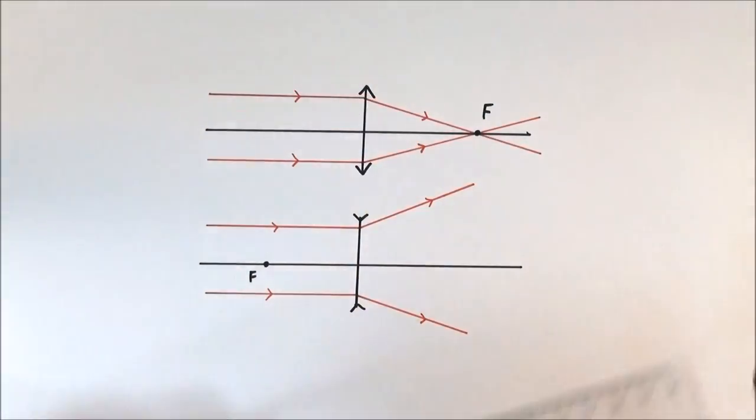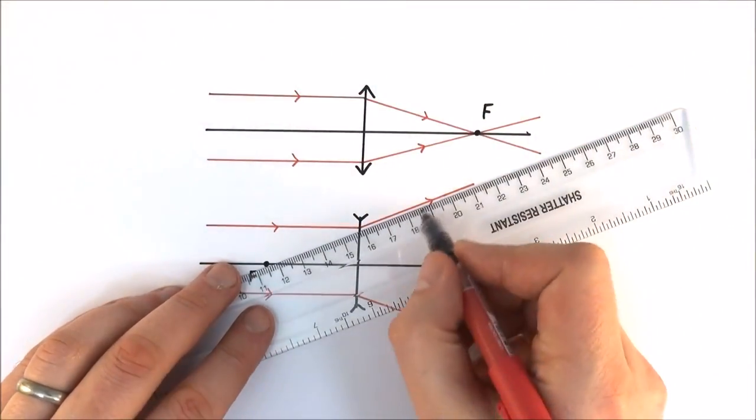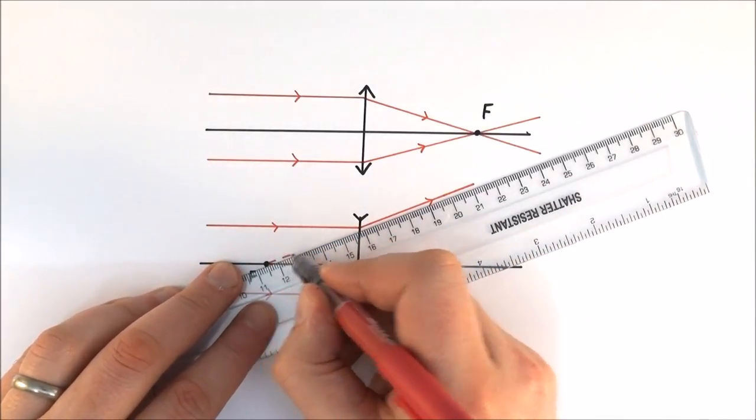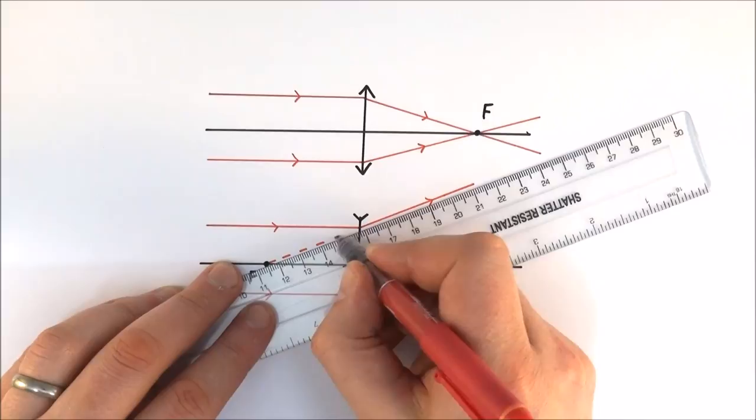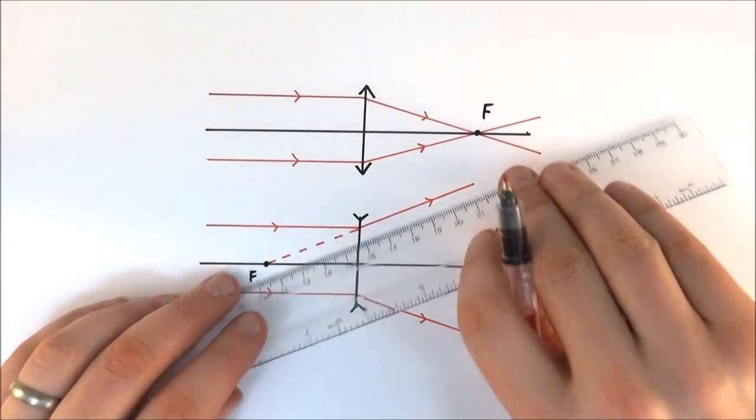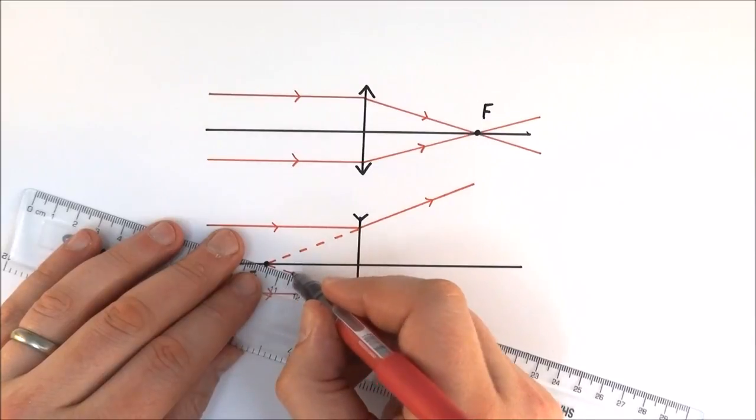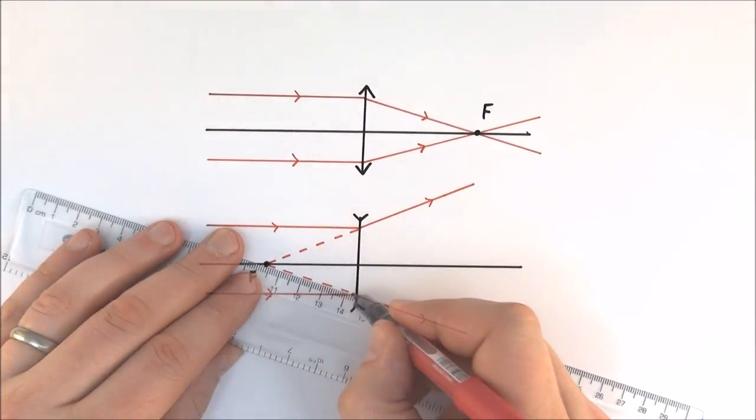The rays appear to diverge from this point. If I follow a line back from this ray of light, I'm going to do this as a dotted line to show that it's not actually a real ray of light. It's basically what we call a virtual ray that appears to come from this point. This is how we get to the focal point for that.